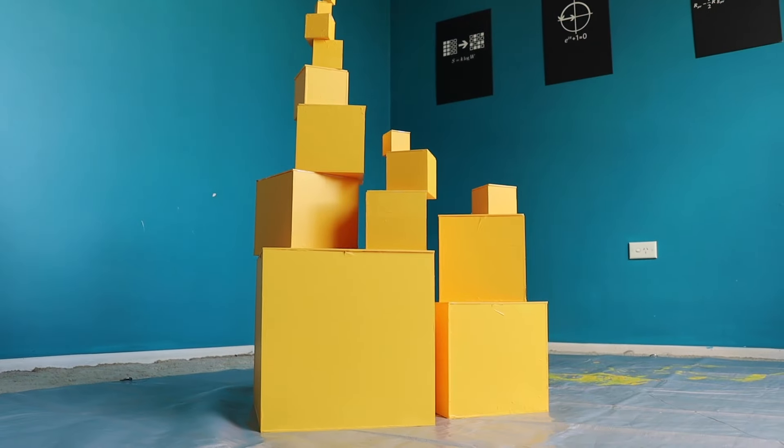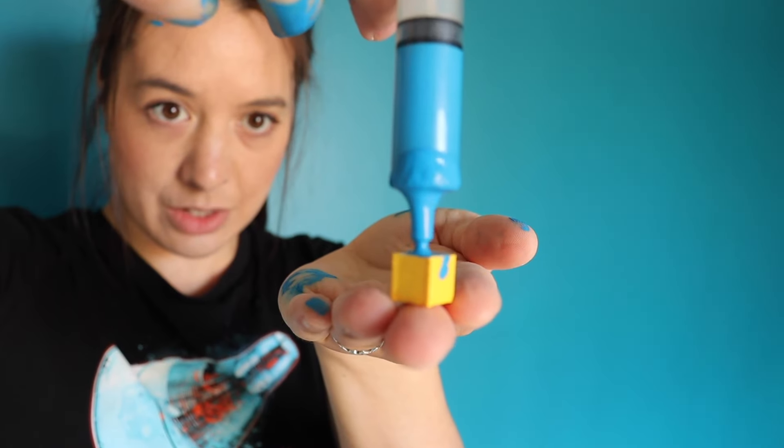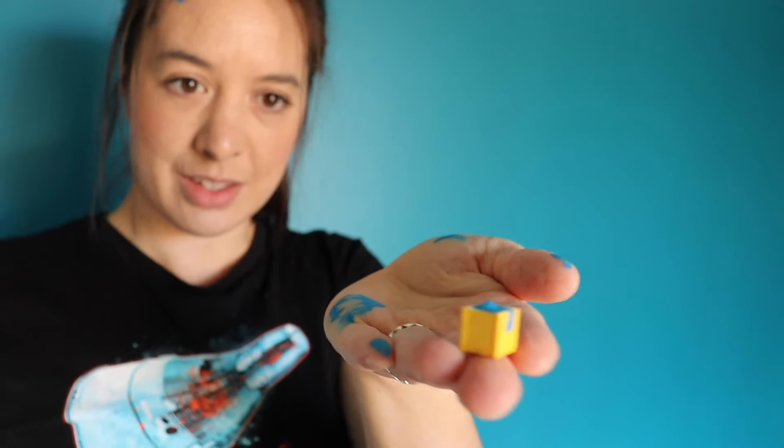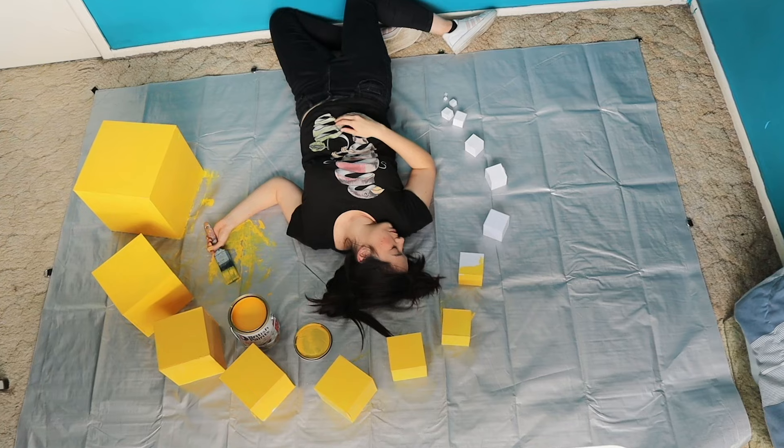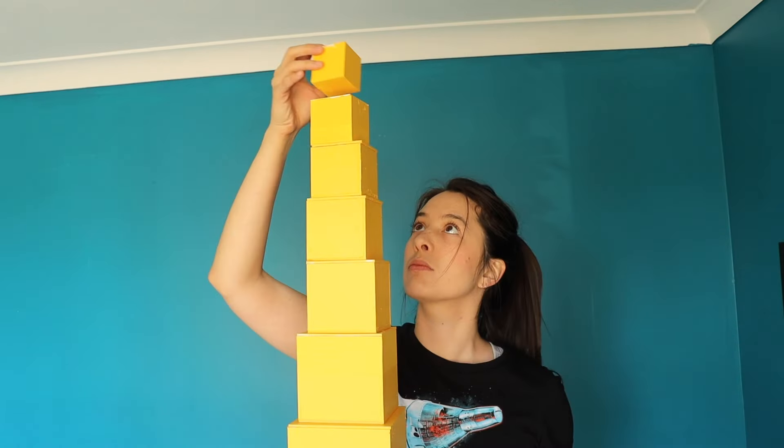There's a type of object that has finite volume, but infinite surface area. This seems to lead to paradoxes like being able to fill it with paint, but never finish painting it. Today we're going to look at the math behind one of these objects and talk about what it means.